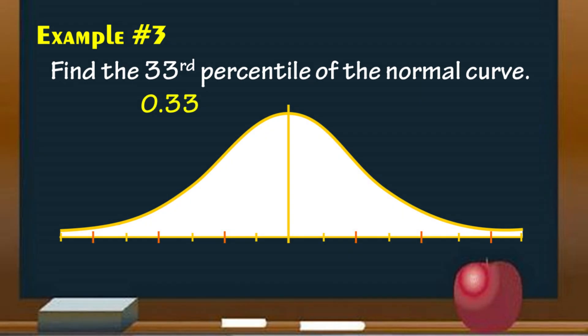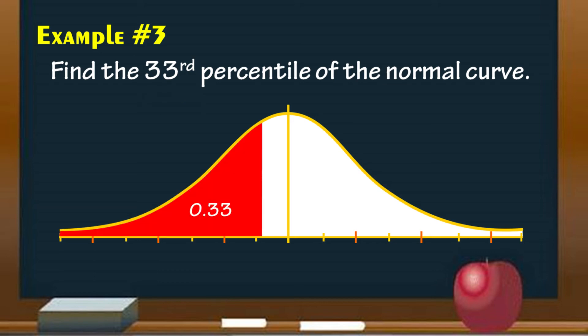Third, identify the region that covers 33% of the normal curve. Since it is less than 50%, the area is located at the leftmost part of the curve.